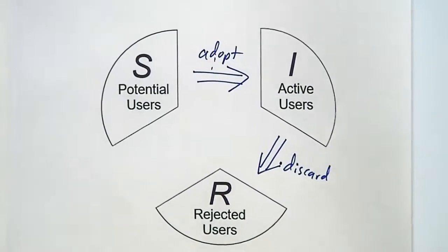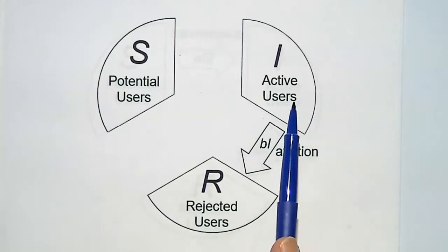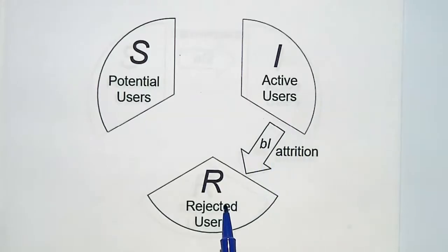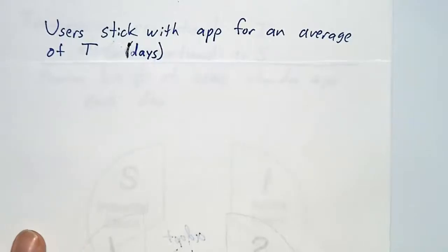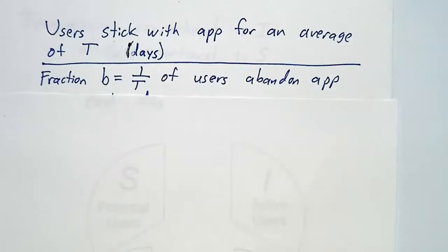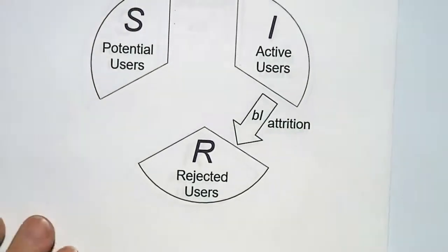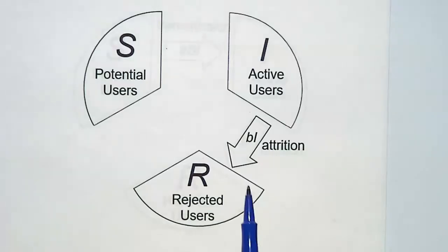Let's look at the people who abandon our product first — the process of attrition, where active users give up the product and become rejected users. Suppose an average person uses the product for T days; it's interesting enough to use for a month, but after that they move on. If an average person uses it for T days, then a fraction 1/T of your users are on their last day. So the rate at which active users become rejected users is B = 1/T times the number of active users.